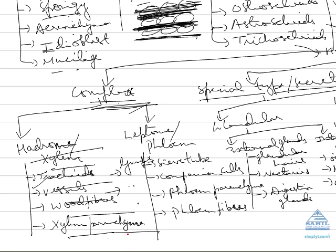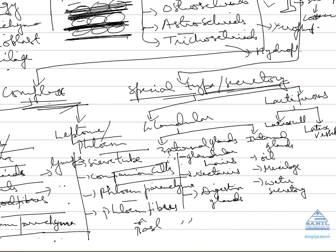Xylem parenchyma is the only living cell in xylem. The other complex tissue is phloem, also called leptome. Phloem contains sieve tubes, which conduct food, accompanied by companion cells. Companion cells and sieve tubes are homologous in origin as they arise from the same mother cell. Phloem parenchyma is the only living parenchyma cell in phloem. Phloem fibers, also known as bast fibers, provide strength to the phloem.